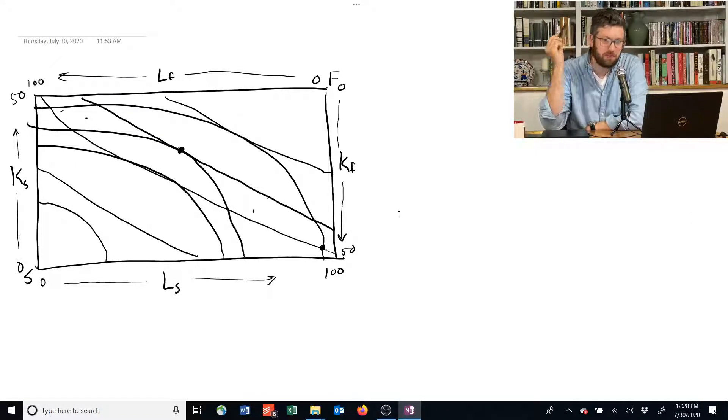Now we've used the Edgeworth box to determine that one particular point, one allocation, exhibits production efficiency. Is that the only efficient point in the economy? No. In fact, there's an infinite number of different productive allocations.